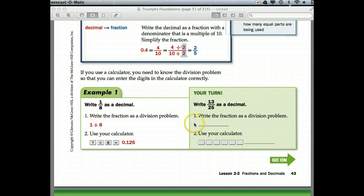Now it's your turn. Pause the video and rewrite 13 over 25 as a decimal. We can rewrite the fraction as a division problem: 13 divided by 25. Use your calculator. Enter 1, 3 divided by 2, 5 equals. Did you get 52 hundredths? It should look like 0.52. Excellent job.